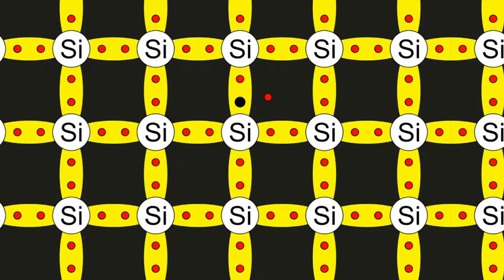When the electron leaves, it also leaves behind what we call a hole. A hole is an absence of electron where a covalent bond can be formed. In a pure semiconductor, also called an intrinsic semiconductor, these free electrons are very few. There are not many free electrons and therefore it is not a very good conductor of electricity.